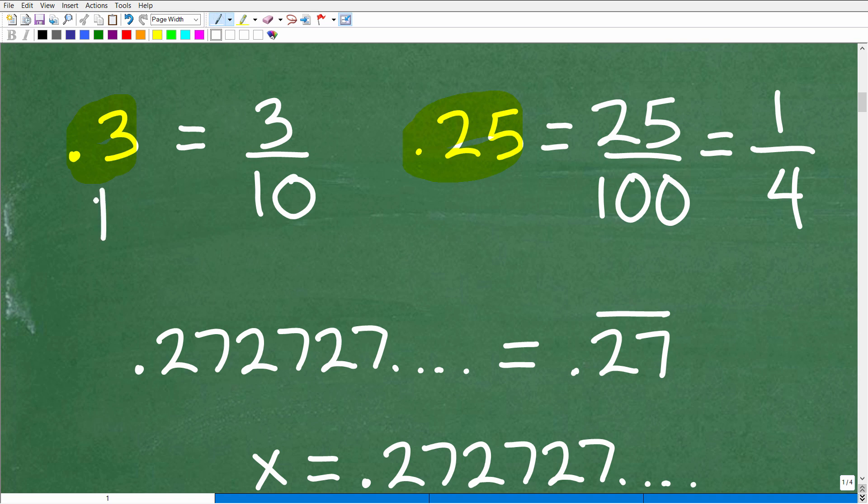So just a quick review. How do we write 0.3 as a fraction? The key is to write or to say this using its place value. So this 3 is in the tenths place, so we would just say this is 3 tenths. You simply just write 3 tenths, and there you go.